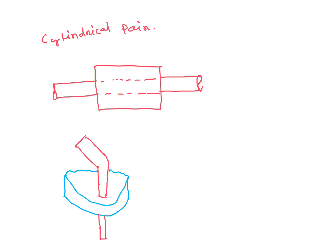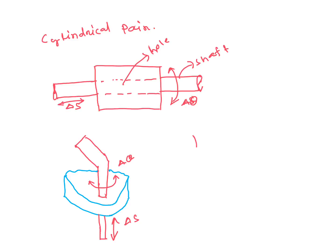A cylindrical pair consists of a cylindrical shaft rotating inside a cylindrical hole. Here, both rotation and translation motion are possible. It permits both angular rotation and independent sliding motion. It has two degrees of freedom and is a lower pair.